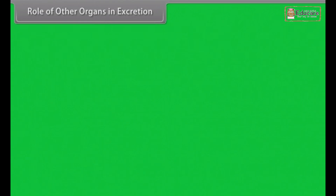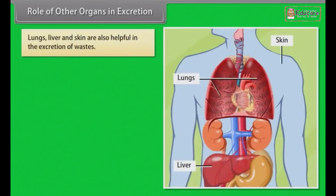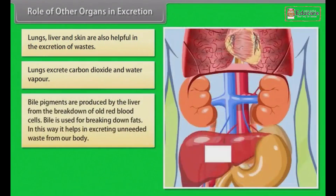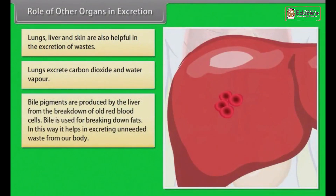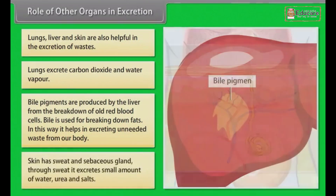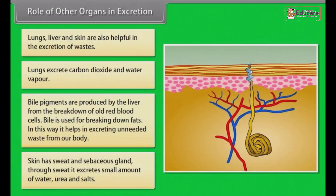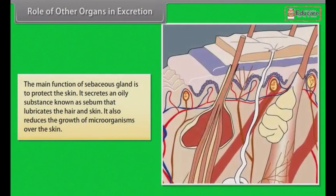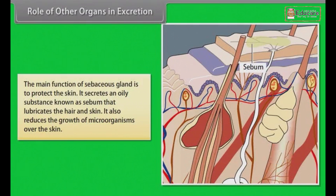Role of Other Organs in Excretion: Lungs, liver and skin are also helpful in the excretion of wastes. Lungs excrete carbon dioxide and water vapor. The liver produces bile pigments from the breakdown of old red blood cells; bile helps break down fats and excrete unneeded waste. The skin has sweat glands and sebaceous glands — through sweat it excretes small amounts of water, urea and salts. The sebaceous glands secrete sebum, which lubricates hair and skin and reduces the growth of microorganisms on the skin.